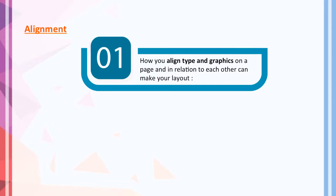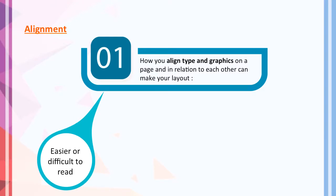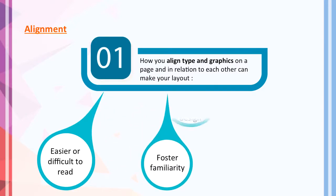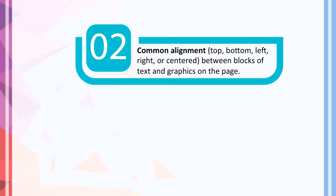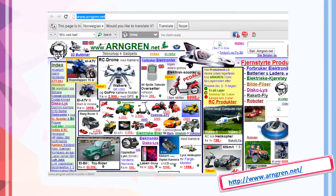For alignment, this is how you align type and graphics on the page in relation to each other, which can make your layout easier or difficult to read. Alignment also fosters familiarity for the users and can bring excitement to a still or boring design. Common alignment options include top, bottom, left, right, or centered between blocks of text or graphics used in a web page.